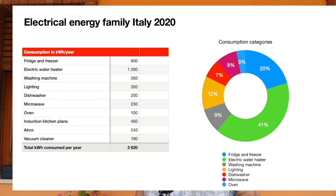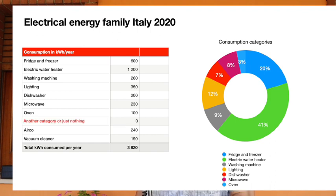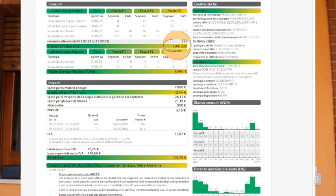Before deciding on a PV system, it's better to understand where your electricity goes today. See here an analysis for an Italian family in 2020. Make for yourself on a spreadsheet or in a paper noteblock this list. Add or delete items as you want — for example, not everyone cooks electric. Now compare the total with your bill and correct the annual values of the single items.